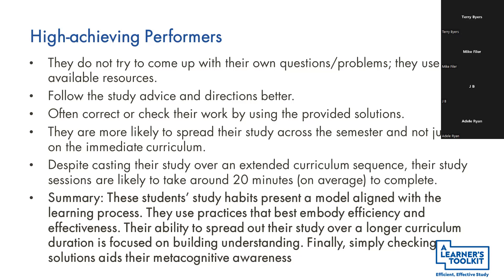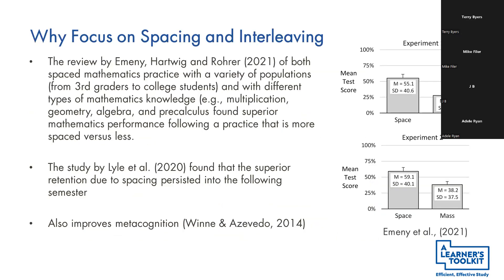High achievers are good at spreading out their study, and they're doing around 20 minutes per session on average — being very efficient, finding questions quickly and getting the job done. They're typically studying around three times a week, 20 minutes each session, and as a result they're consistently on top of the material because their practice is well-structured.